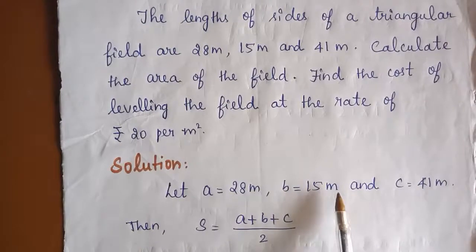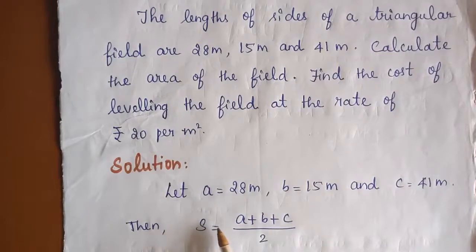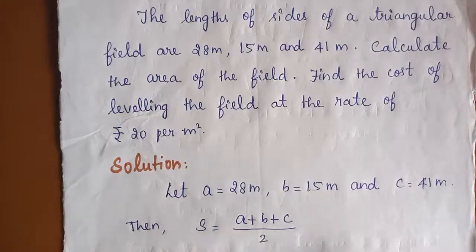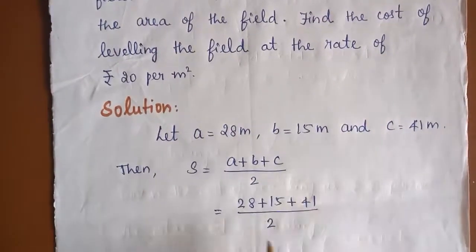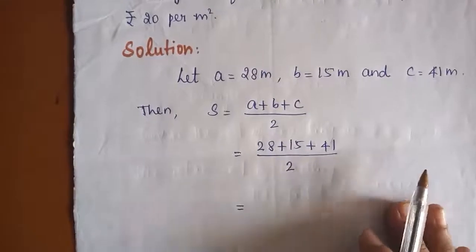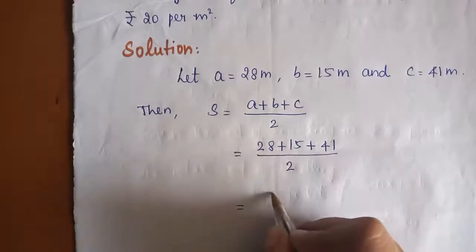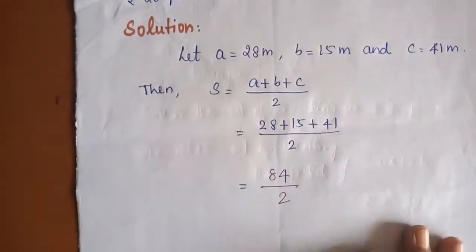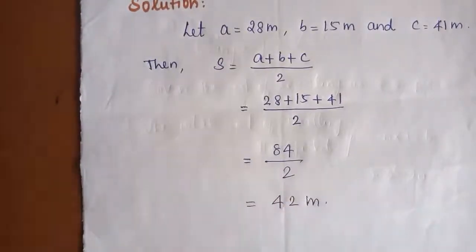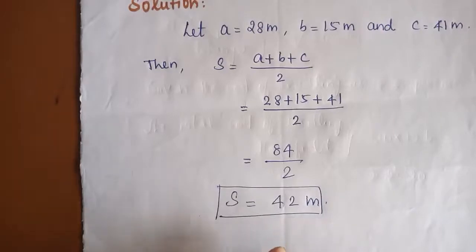Solution: Let the sides of the triangle be A = 28 m, B = 15 m, and C = 41 m. The semi-perimeter S is equal to (A + B + C) divided by 2, which is (28 + 15 + 41) divided by 2. Adding gives 84 divided by 2, so S is equal to 42 metres.